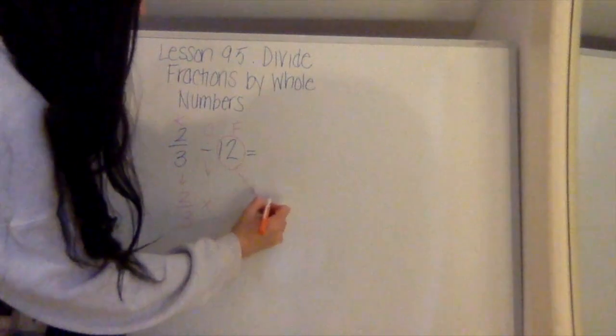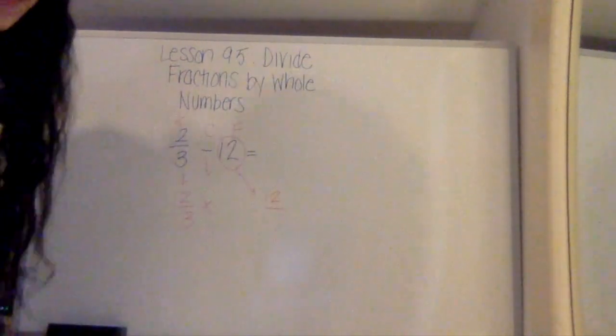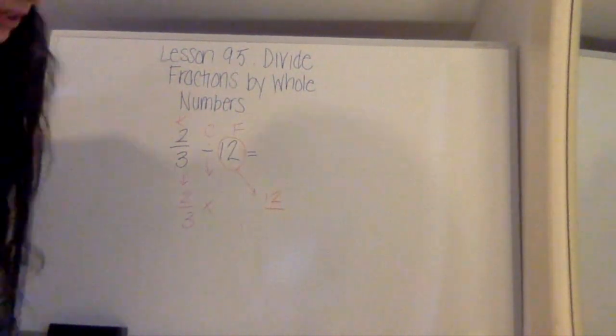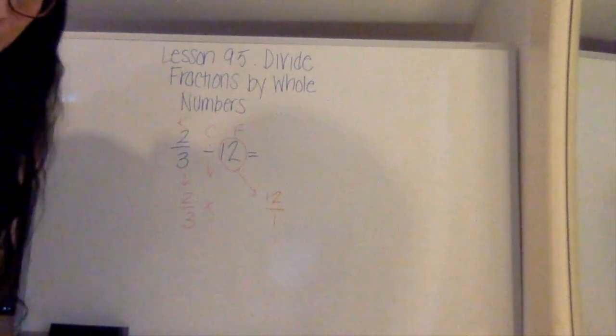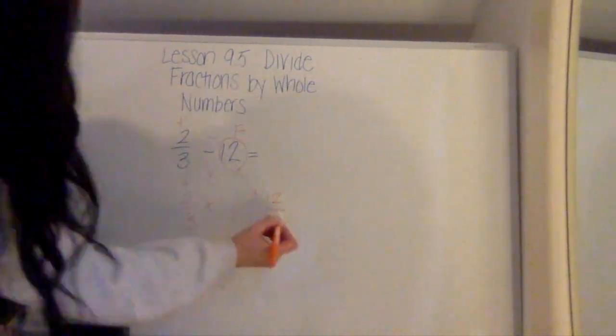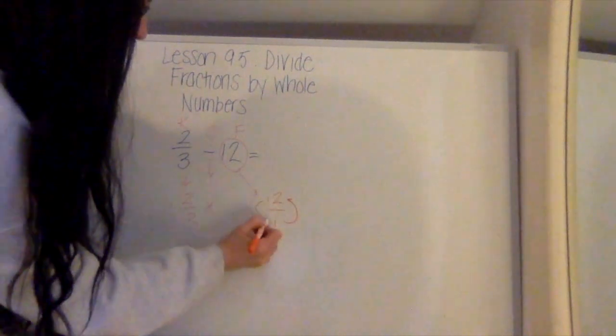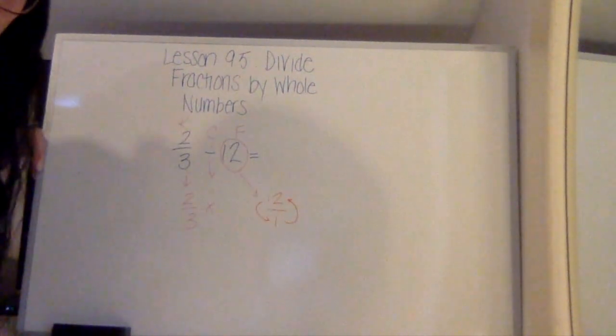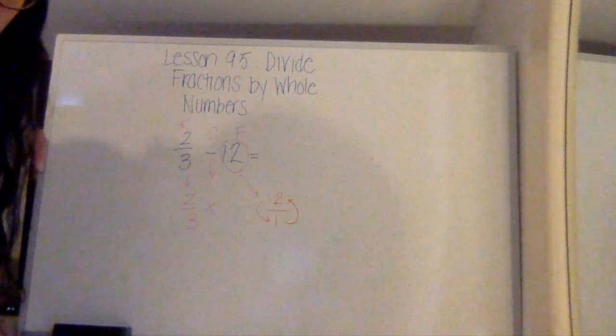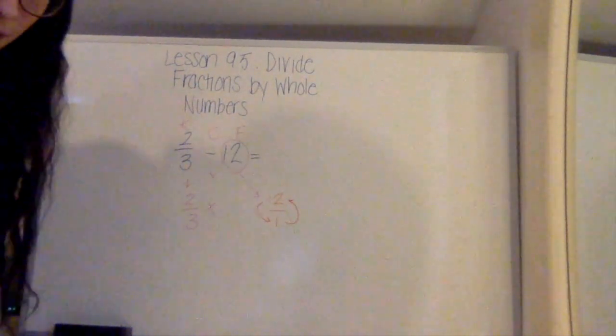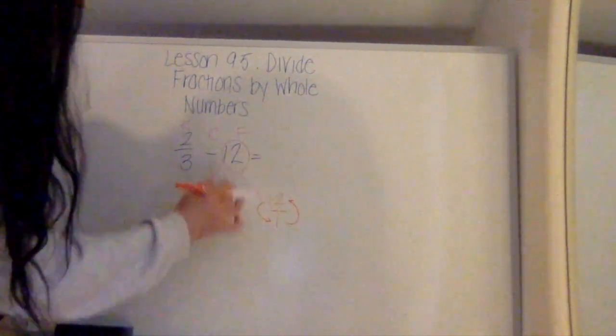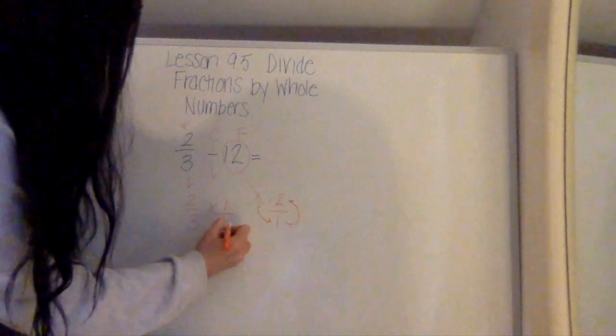So remember that you can always write a whole number as an improper fraction by putting it over 1. So when you do your flip, which is really the reciprocal, remember that you're just flipping the top and the bottom. So in order to take the reciprocal of a whole number, you just put it over 1, and then you can flip it. So the 12 becomes 1 over 12.